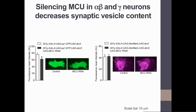We didn't observe any major structural defect in mushroom body neurons upon MCU silencing. We then performed a finer analysis of the synaptic vesicle compartment using the synaptotagmin-GFP probe as a surrogate, and analyzed the dendritic compartment using the Denmark probe. Upon MCU silencing, there was a significant decrease in the synaptotagmin-GFP signal, leading us to conclude that silencing MCU in alpha-beta and gamma neurons decreased the synaptic vesicle content.